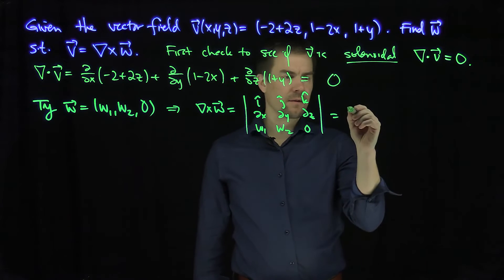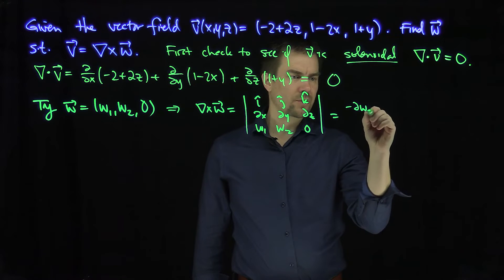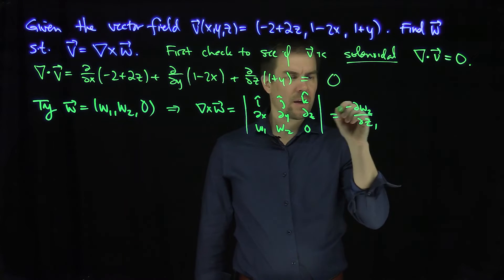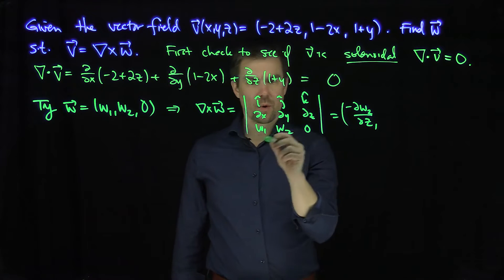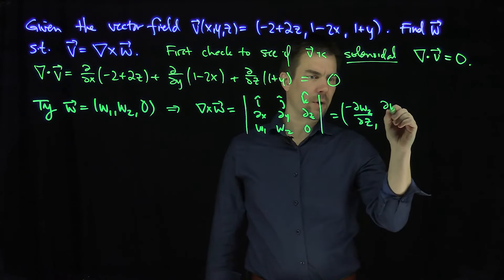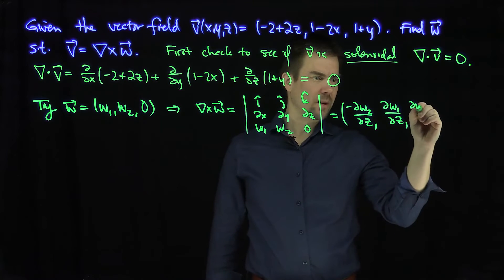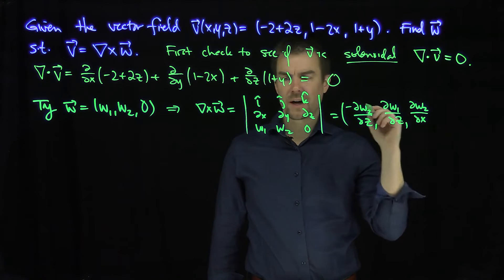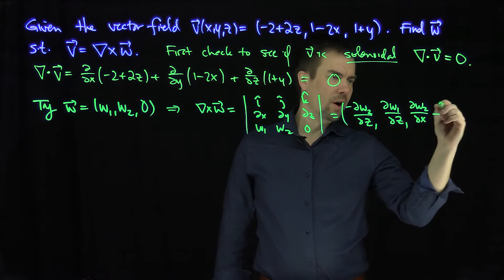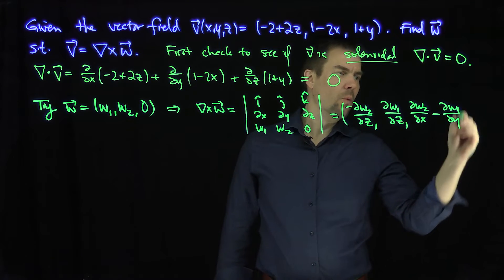The i entry of this thing is going to be negative partial w2 partial z. The j entry is going to be positive partial w1 partial z. And the k entry is going to be partial w2 partial x minus partial w1 partial y.